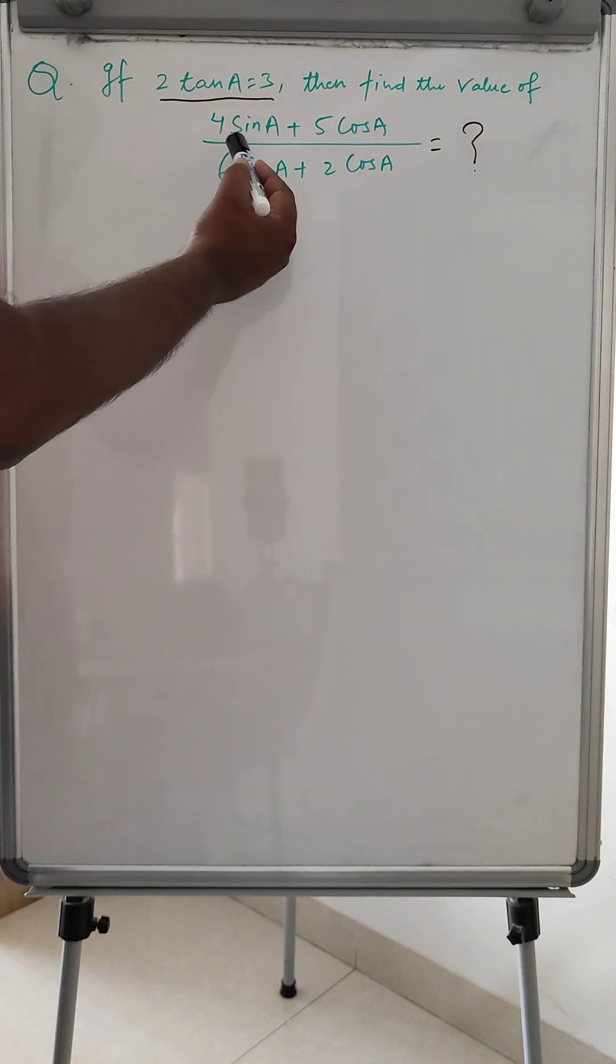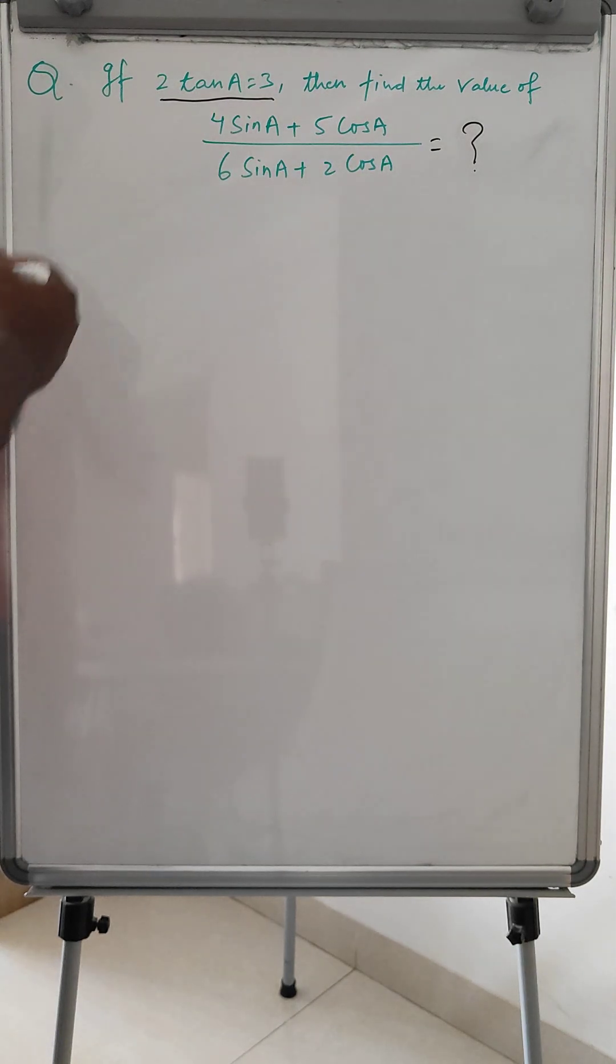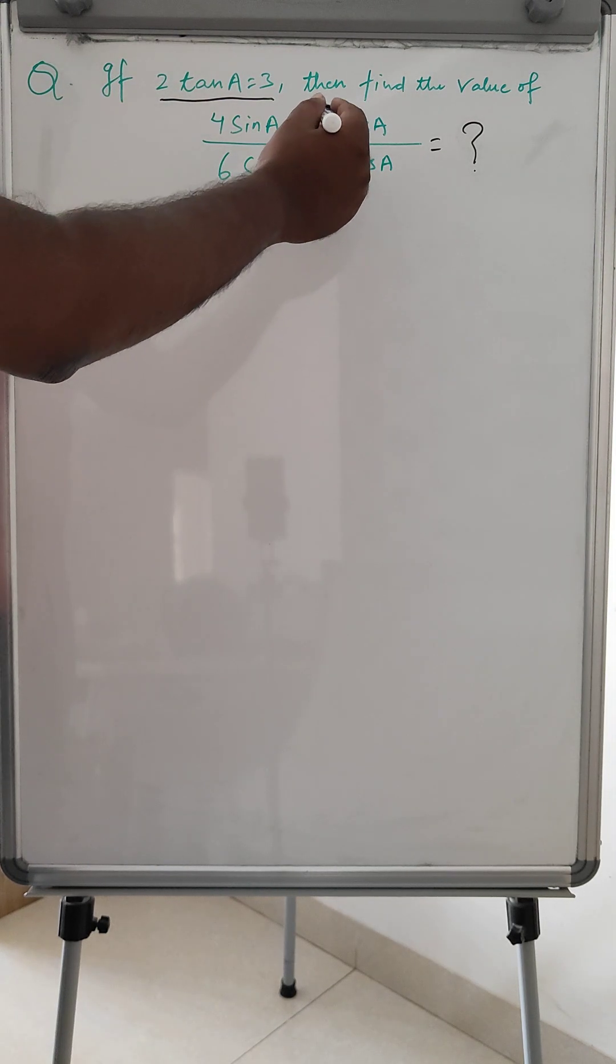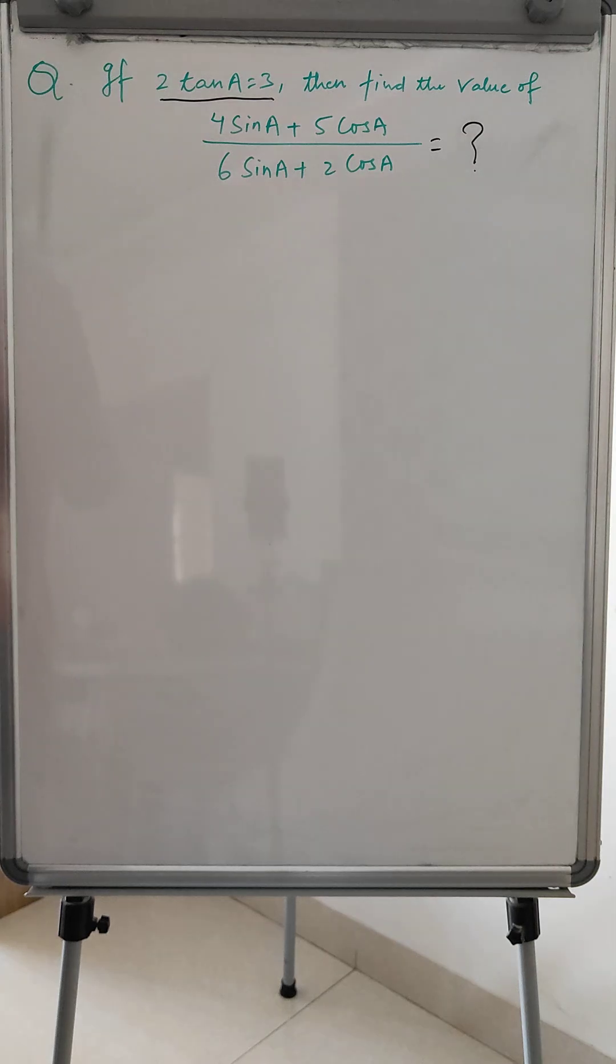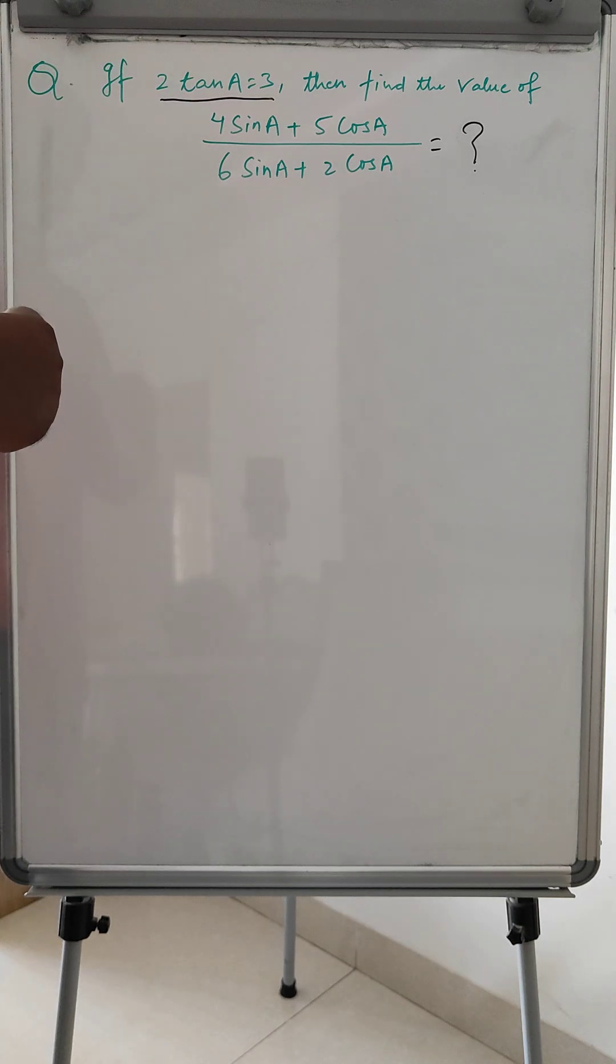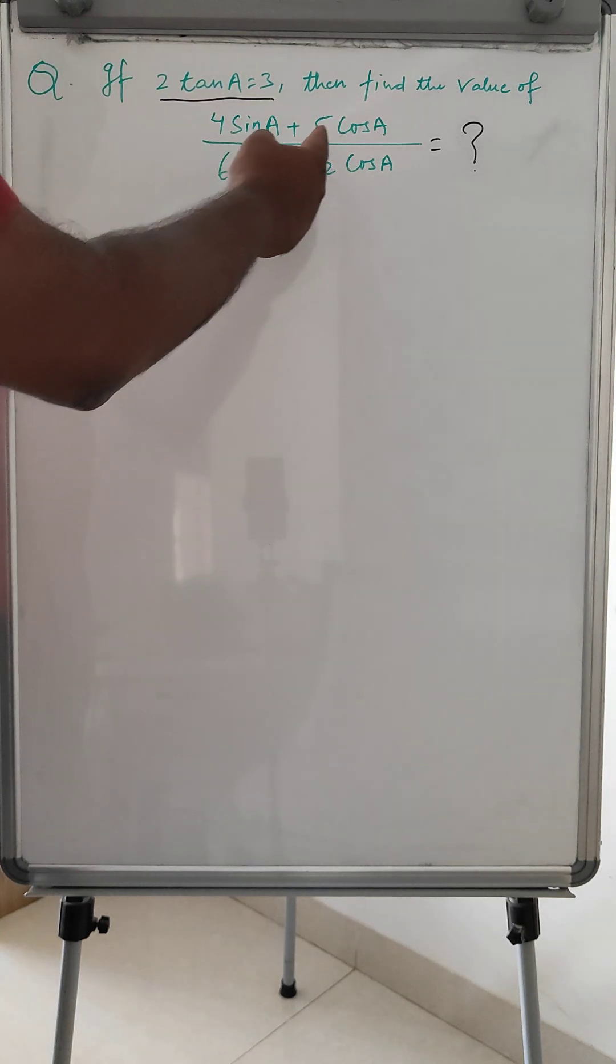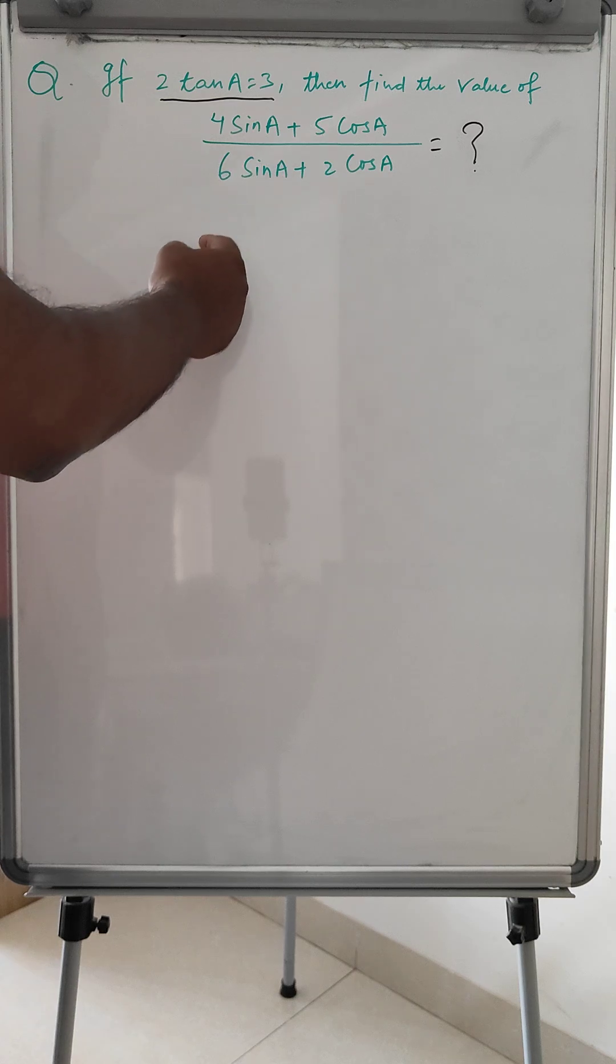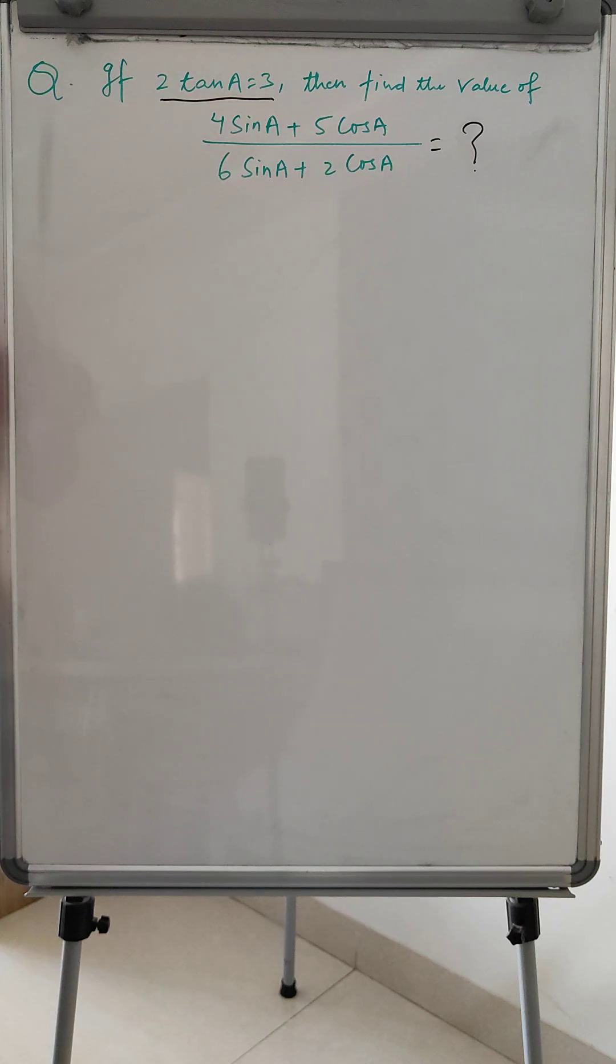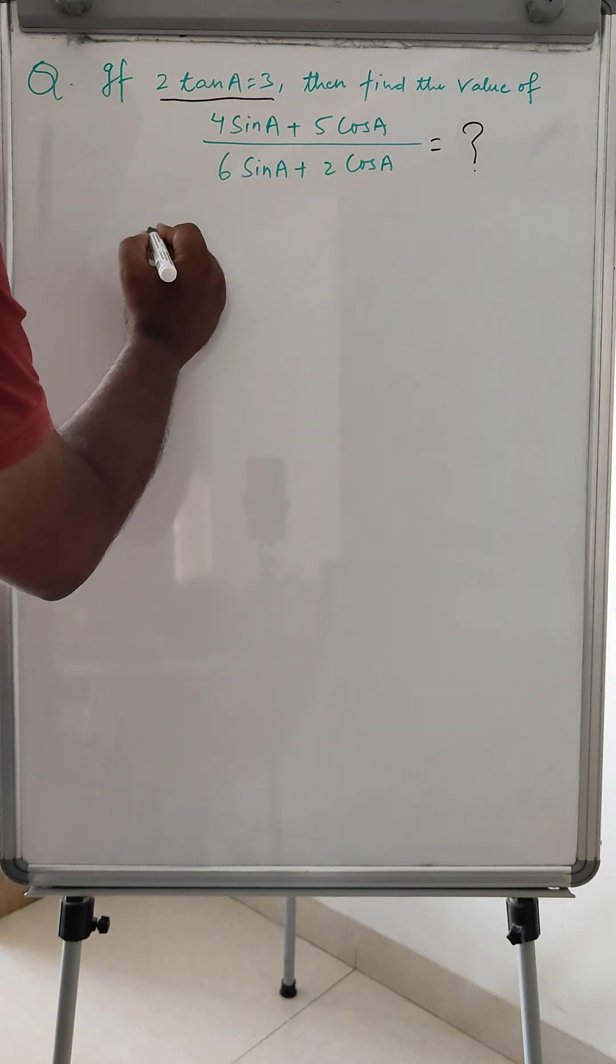And in the question, it is like sin and cos. So we have to convert this into tan. What is tan? Tan is nothing but sin by cos. So here if we divide denominator and numerator by cos, it will become tan. So let us see how we can use this.